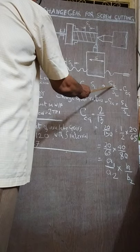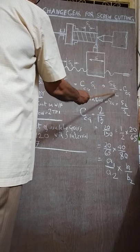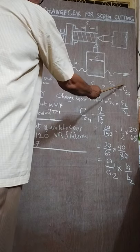So lead of the thread or the lead of the screw by lead of the lead screw is equal to CG, the change gear.